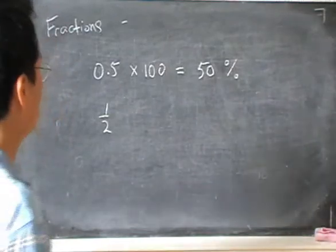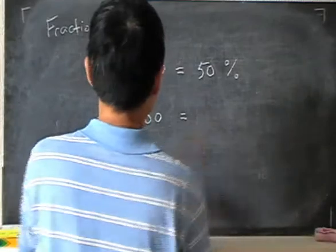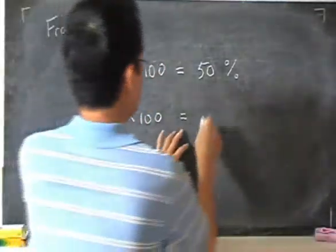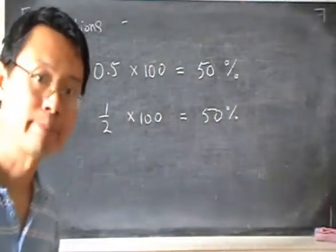Or if I have a fraction and I want to convert this to a percentage, it's the same. I would multiply by 100. So this gives me half times 100 is again 50. 50%.